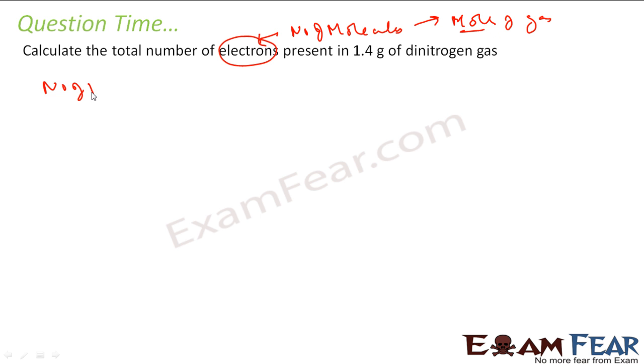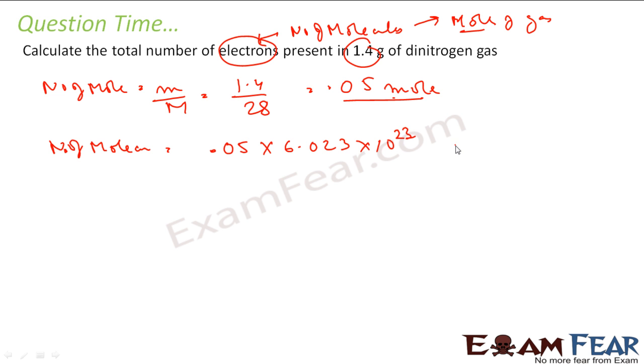So number of moles is nothing but mass by molar mass. What is the mass? 1.4 gram. What is the molar mass of nitrogen? 28. So I get 0.05 mole. So number of molecules is very easy to find. Number of molecules is nothing but number of moles into 6.023 into 10 to the power 23. This is the number of molecules we get.